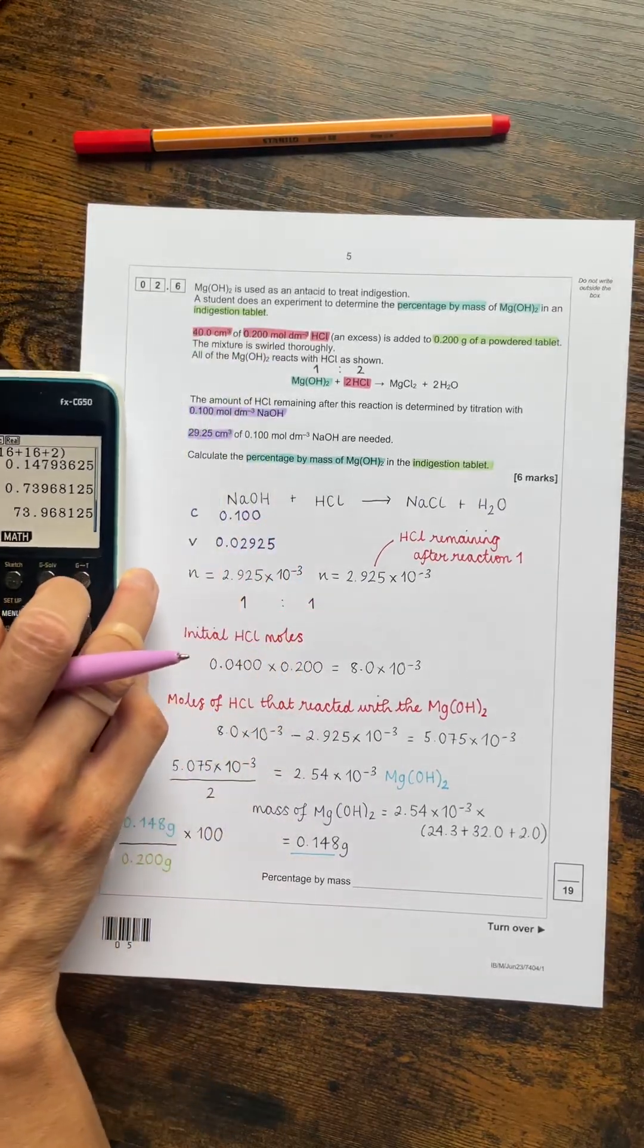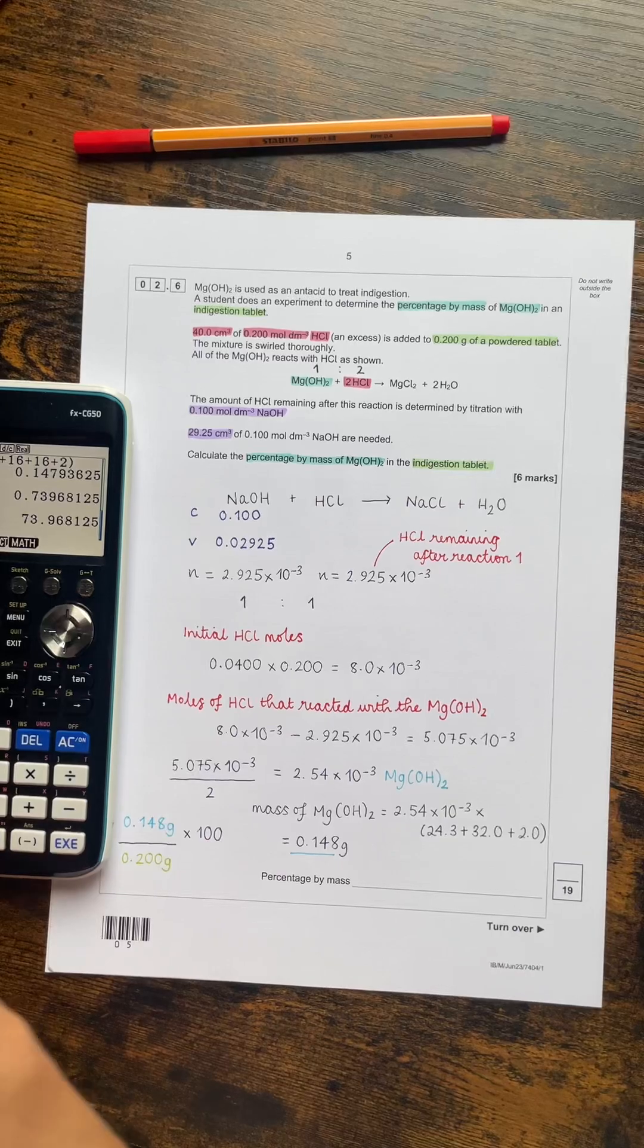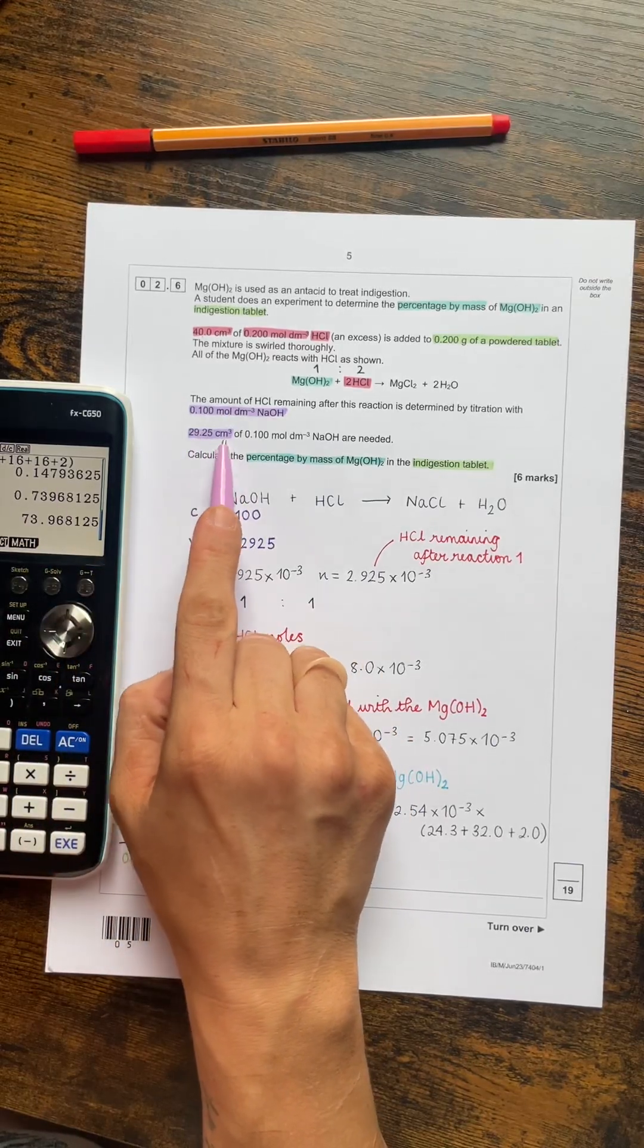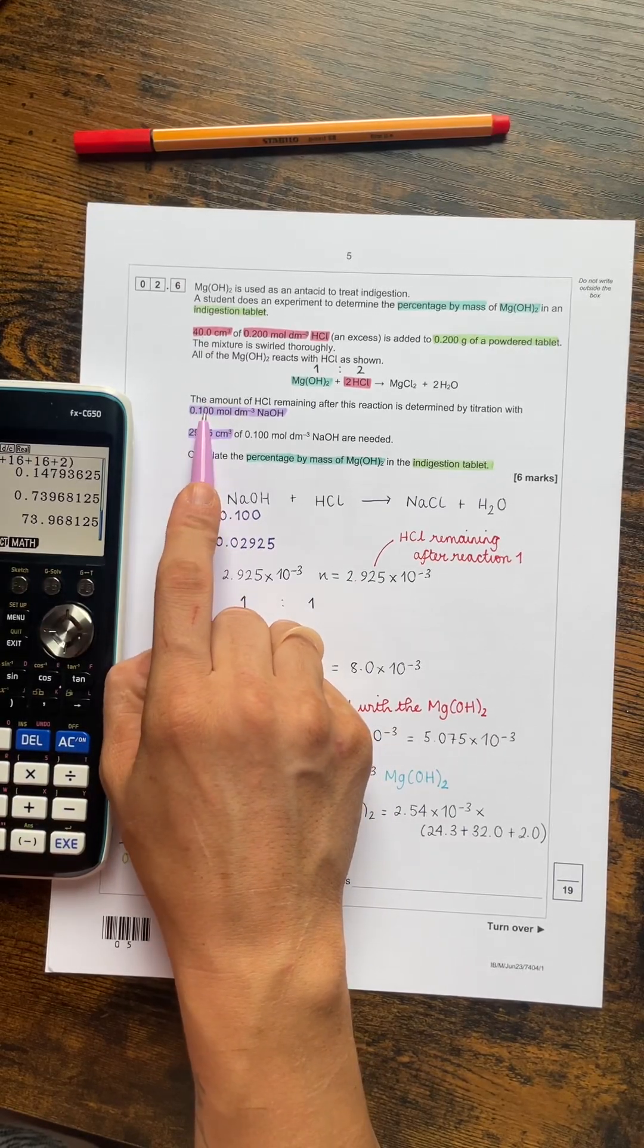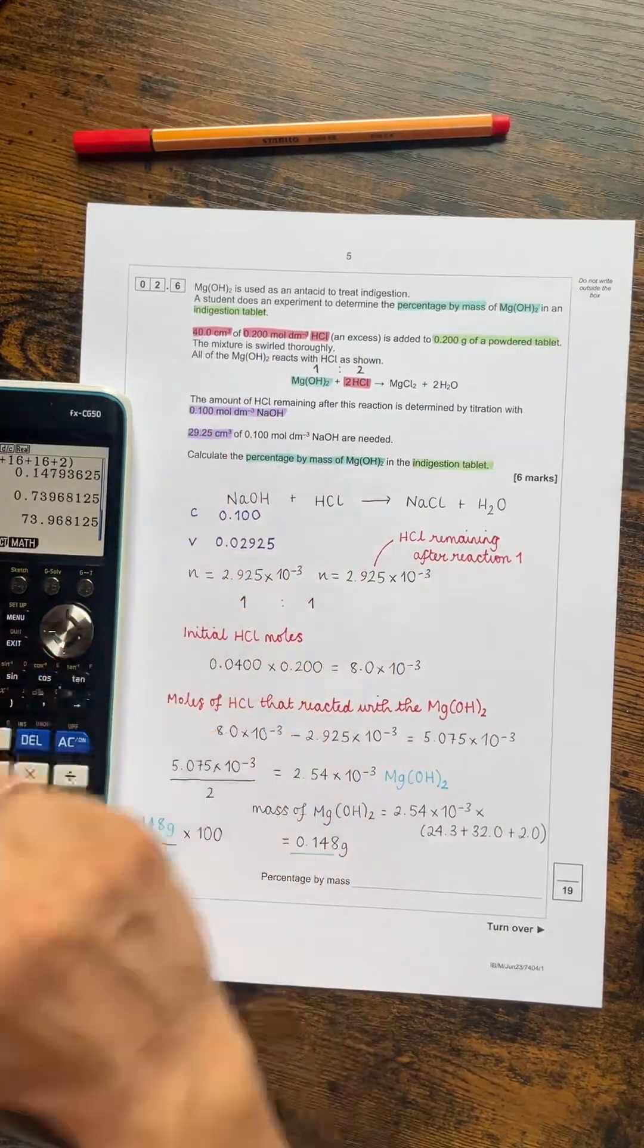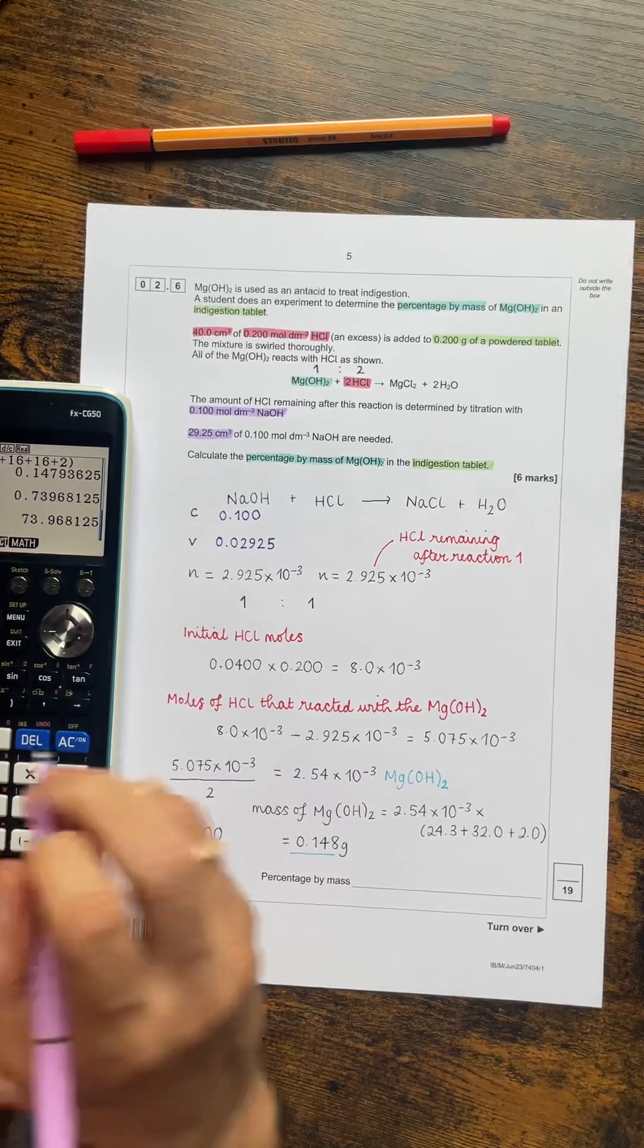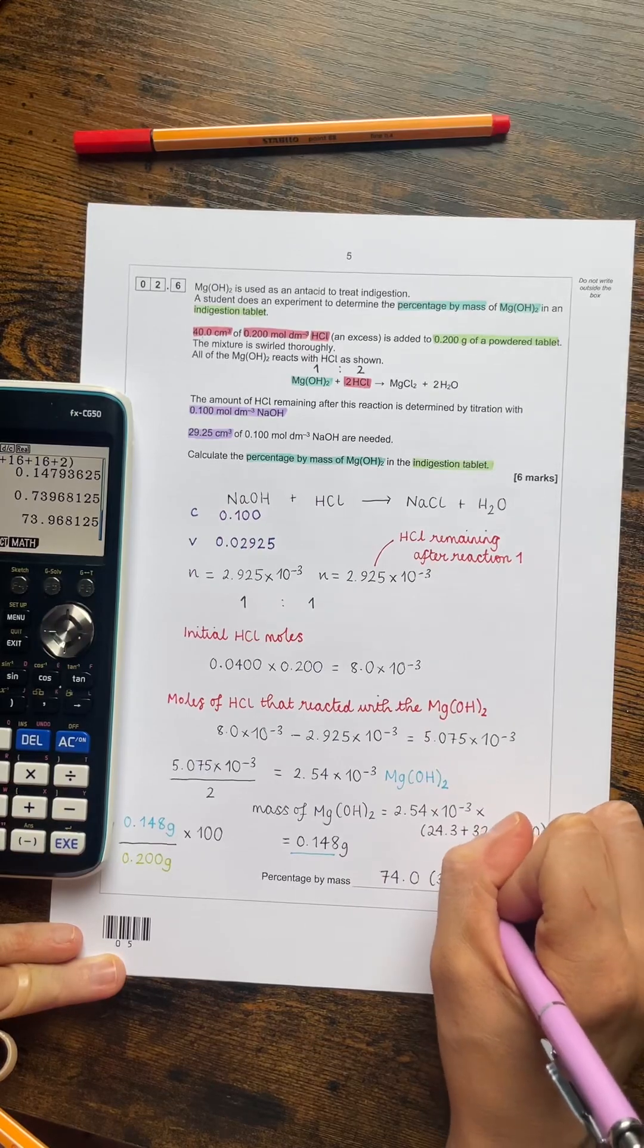Now, it hasn't specified how many significant figures we need to give our answer to here. Even if it doesn't specify, we should be looking back at the numbers in the question and seeing what's the smallest number of significant figures that they gave us. So the value for the mean titre of sodium hydroxide was four significant figures. But the concentration and the mass and that concentration and that volume were given to three significant figures. So I'm going to give this to three significant figures, which annoyingly, because it's 73.96, it's going to have to be 74.0. So three significant figures.